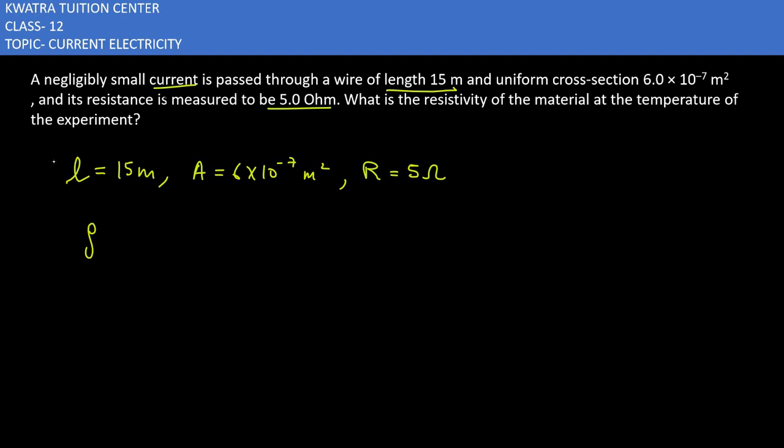Now how do we find out rho? We know that R has a formula - it depends on A, it depends on... R is equal to...